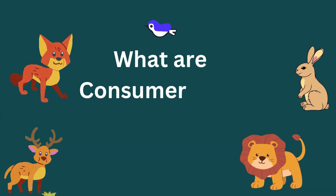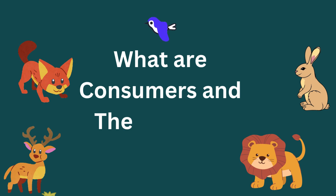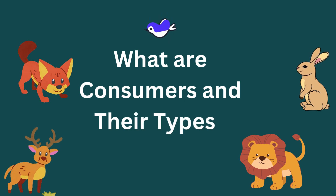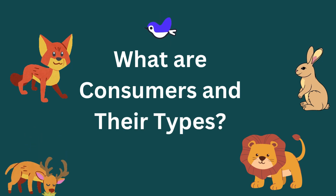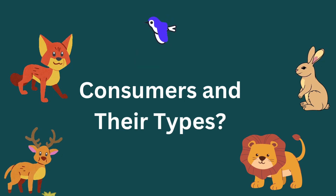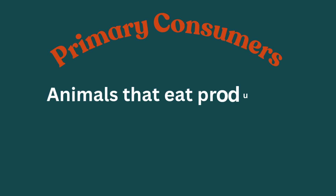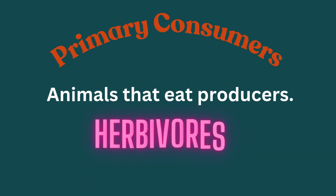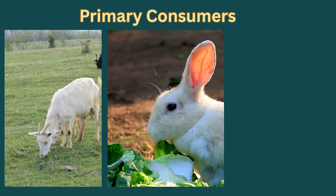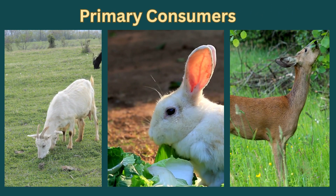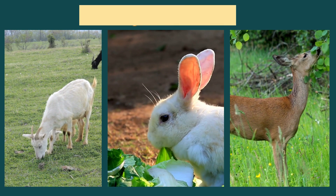Consumers are animals that eat other organisms. Consumers can be divided into different categories. First, primary consumers: animals that eat producers, also called herbivores. For example, goat, rabbit, deer, etc.